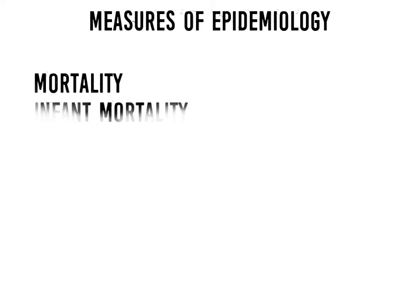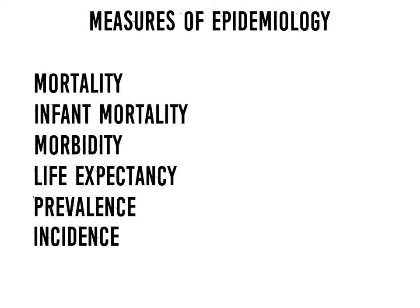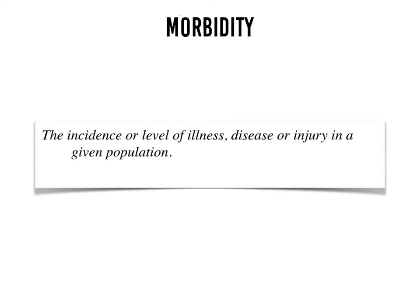We've looked at mortality and infant mortality, and this presentation will focus on morbidity. We'll then look at life expectancy, prevalence, and incidence. Morbidity can be defined as the incidence or level of illness, disease, or injury in a given population. Remember that mortality was about the number of deaths or the death rate, whereas morbidity is the rate of illness, disease, or injury — the amount of people that actually have a disease in the population.